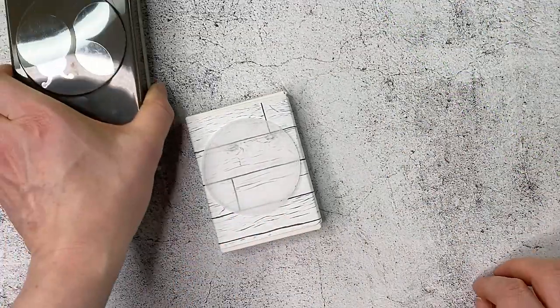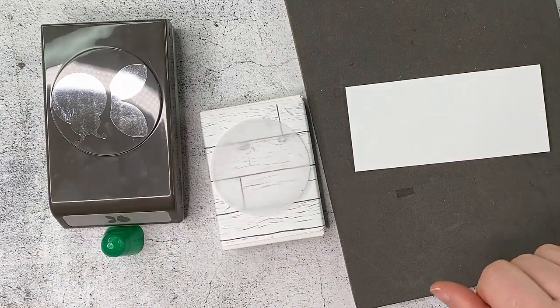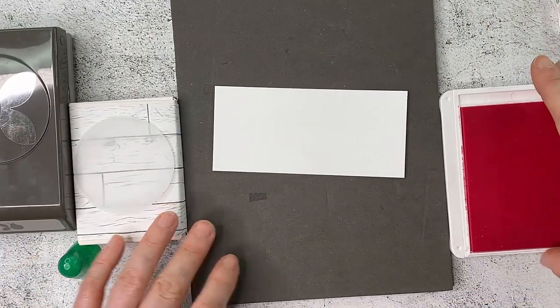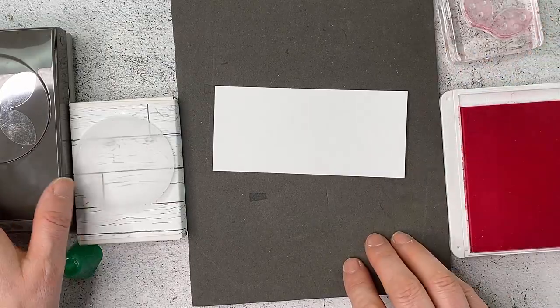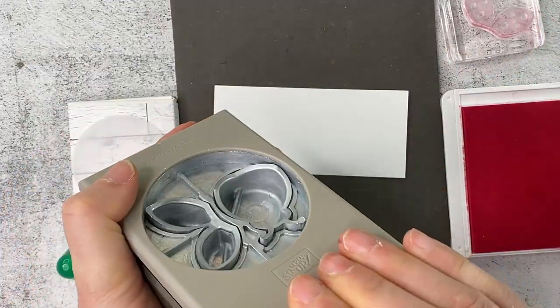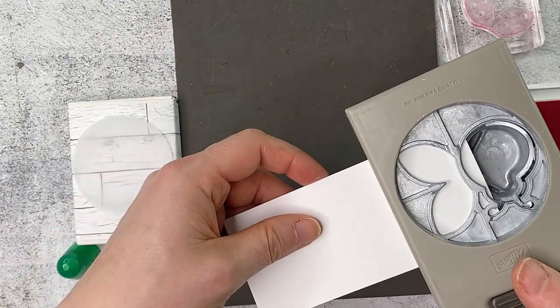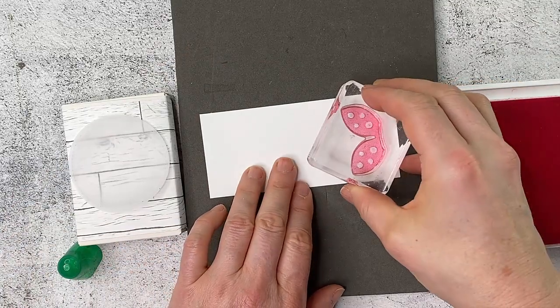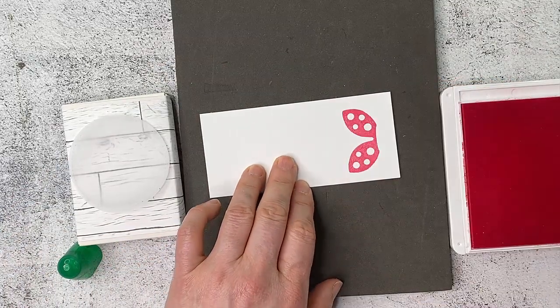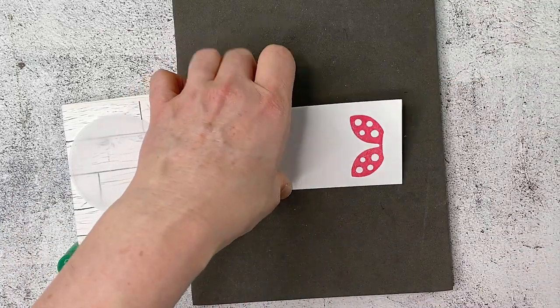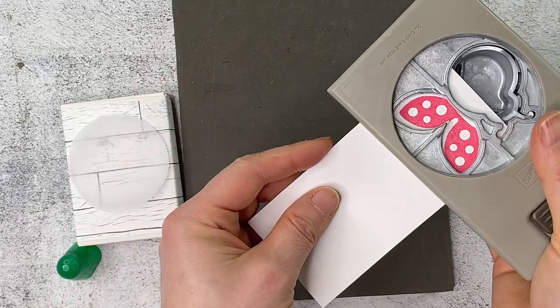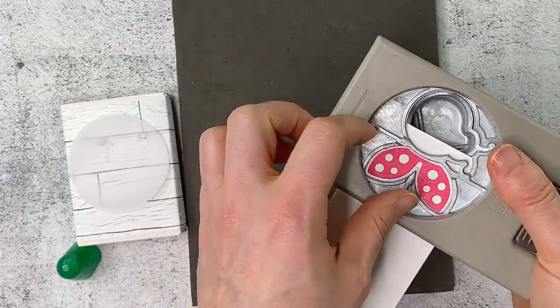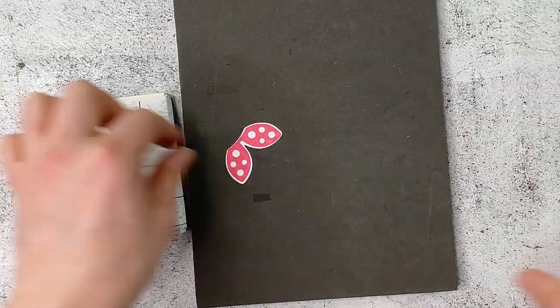Then let's do our ladybug. So with the ladybug I'm going to stamp those wings in polished pink and make note of how that stamp actually is going to fit into the punch nice and easily like that and just punch that.